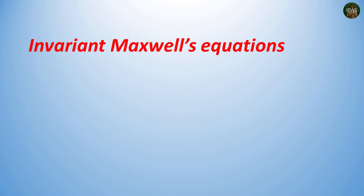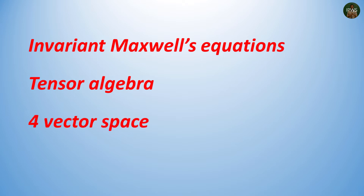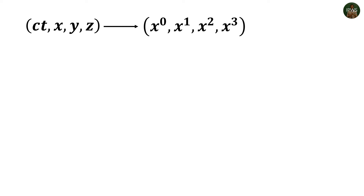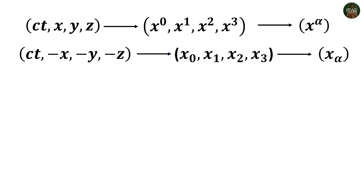We will do the entire calculation using tensor algebra, so let me introduce some notations. We introduce four-vectors, treating ct — where c is the velocity of light in free space and t is the time — on the same footing as the position coordinates x, y, z. We use superscripts 0, 1, 2, 3 on x to denote them, compacted as x^alpha. We will also use subscripts for negative terms, though ct remains positive.